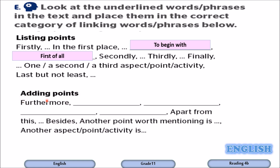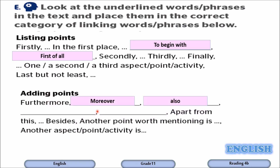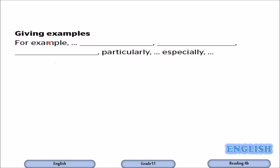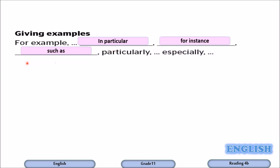For adding points, the writer used moreover, also, and in addition. For giving examples, the writer used in particular, for instance, and such as.